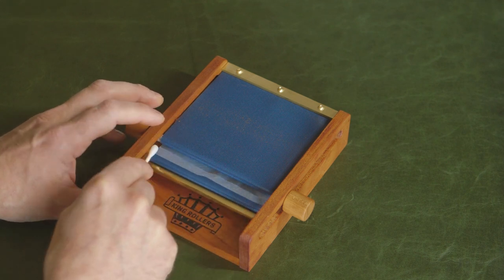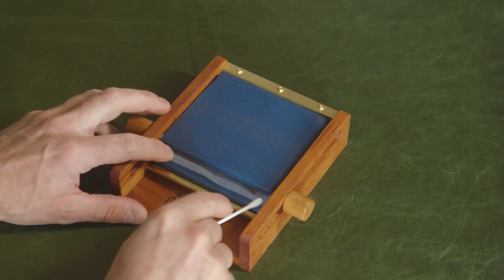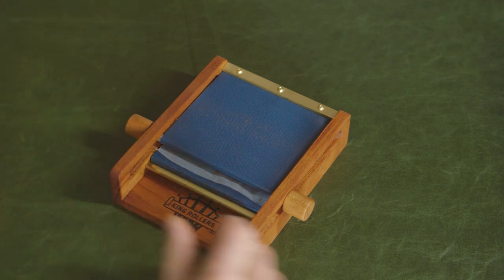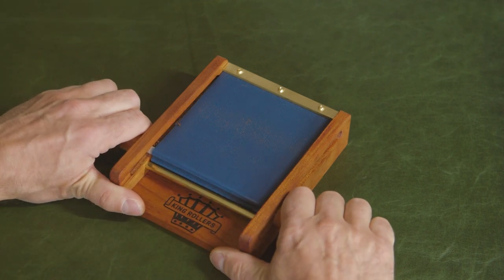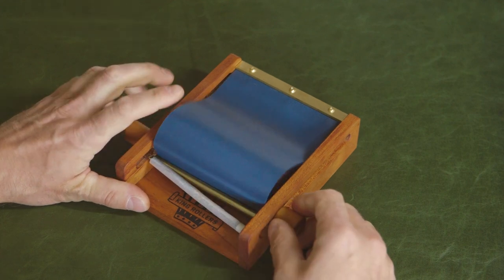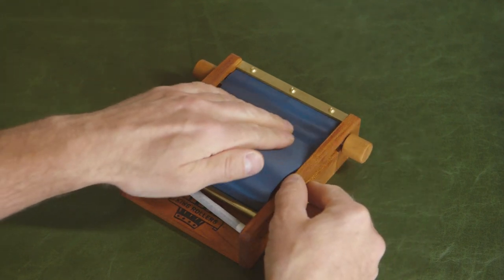When only the glue strip is showing, gently wet the paper and complete the roll by pulling the rod towards you while applying downward pressure. There you go, a little practice and you'll have perfect cigarettes every time.